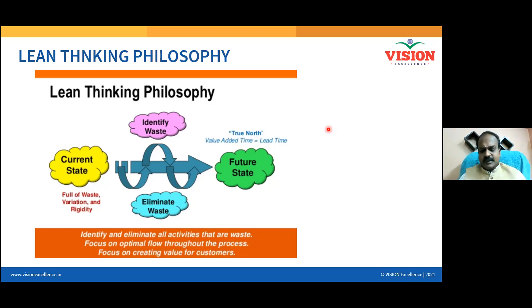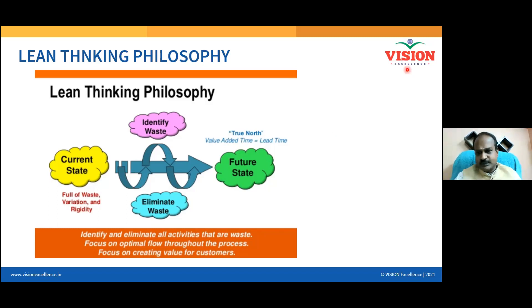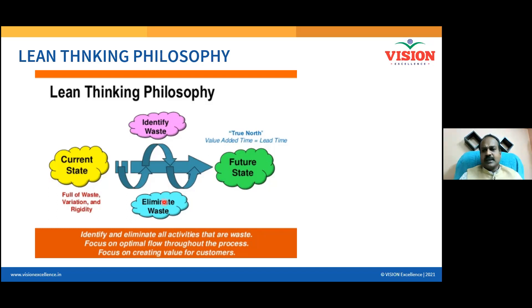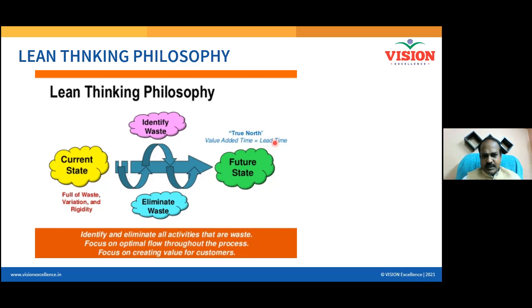The focus of Lean is to eliminate waste. When we eliminate waste, the cycle time of the operation comes down. When cycle time comes down, lead time comes down, deliveries happen faster, and the number of business cycles increases. The Lean philosophy is about identifying and eliminating wasteful activities so the process transforms from its current state to a future state where lead time equals value-adding time.